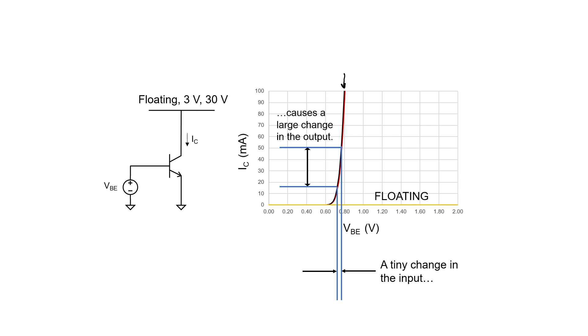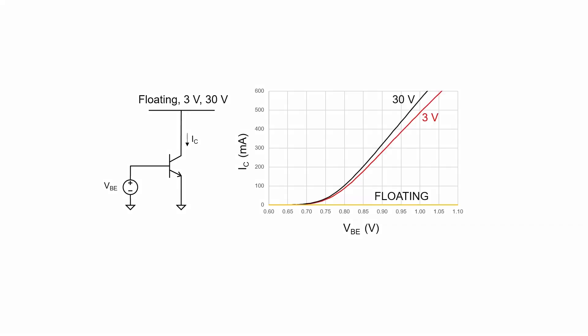Pretty much all silicon bipolar transistors have plots that look very similar to this one. If we zoom in on that graph just a little bit, we can see the separation between the 3 volt and the 30 volt curves. Notice here that on my x-axis, I'm only plotting between 0.6 volts and 1.1 volts. We still see down here roughly a 0.7 volt turn-on voltage for the diode or a 0.7 volt threshold.